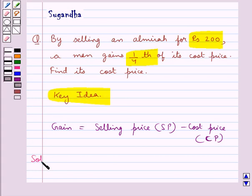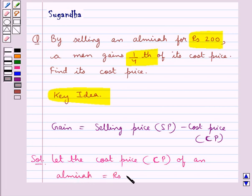Let's proceed with the solution now. Since we need to find the cost price of the Almira, we assume, let the cost price (CP) of an Almira be equal to Rs. X.